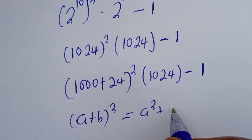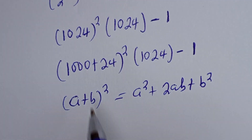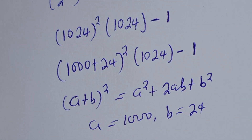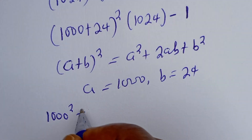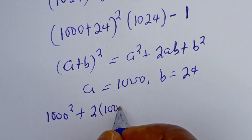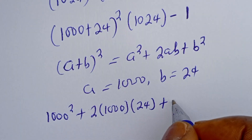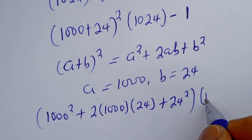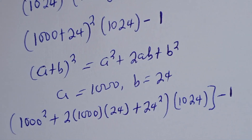In this case, a is equal to 1000 and b is equal to 24. Now let's substitute: we have 1000 squared plus 2 multiplied by 1000 multiplied by 24, plus 24 squared, everything multiplied by 1024, minus 1.